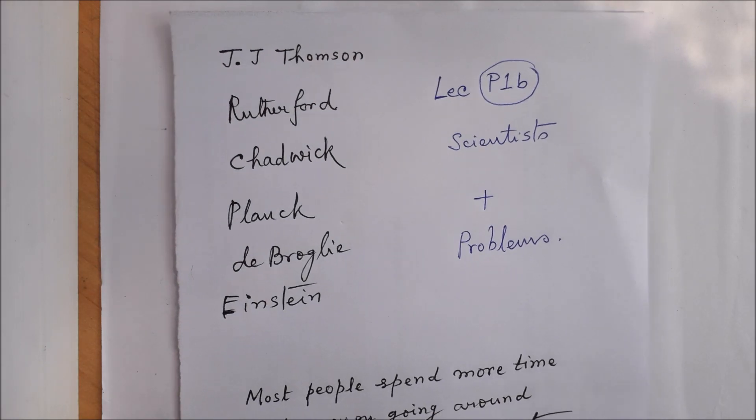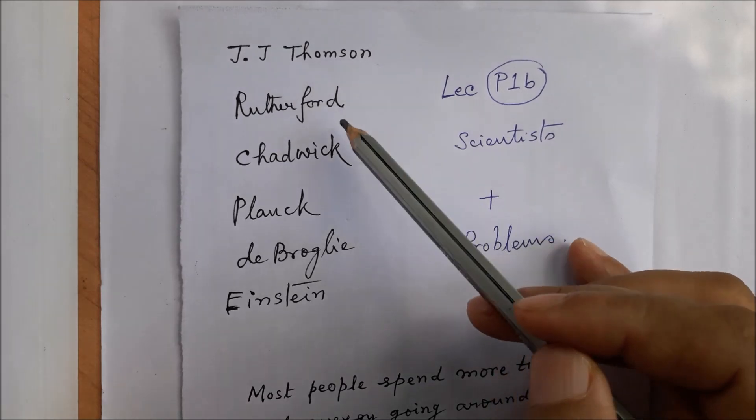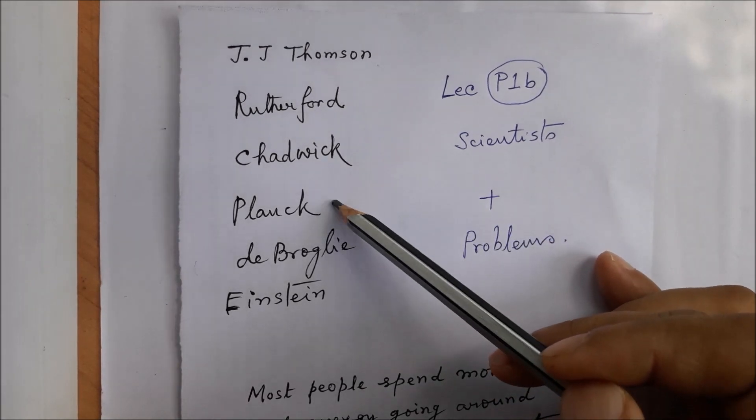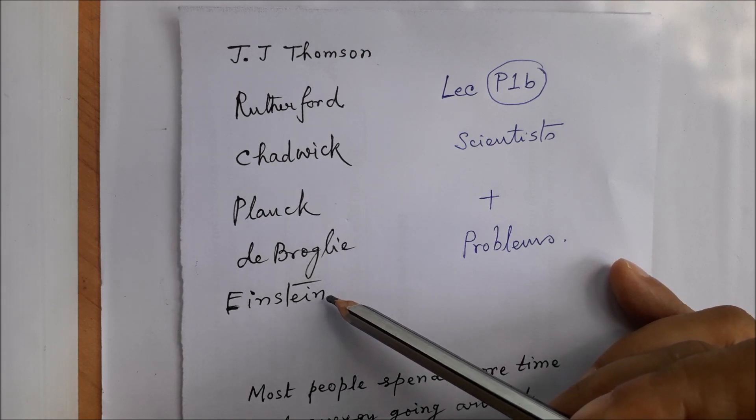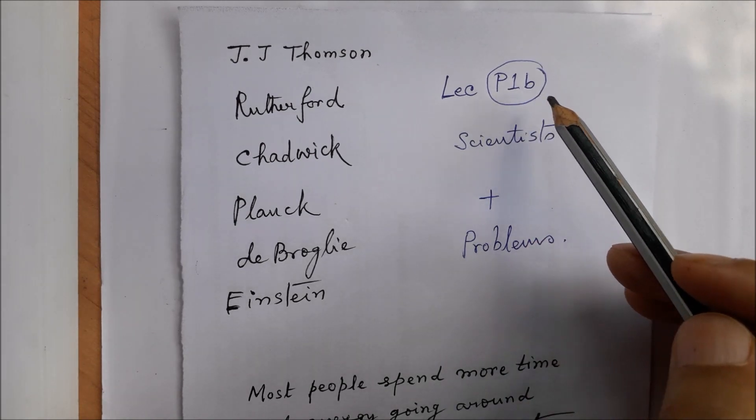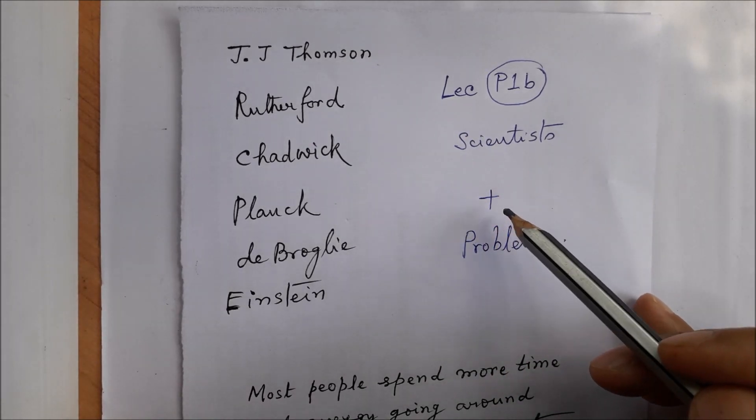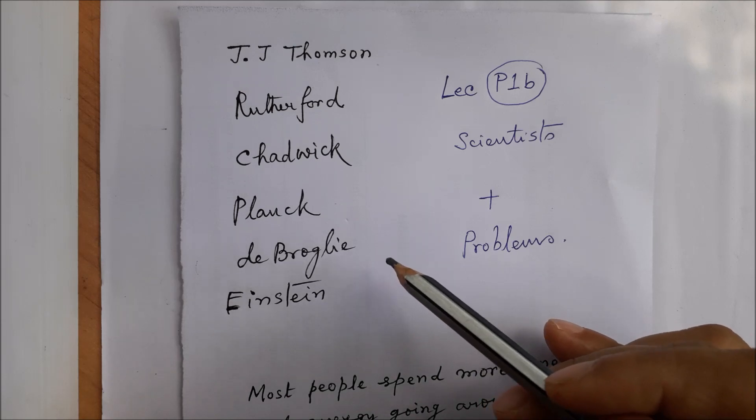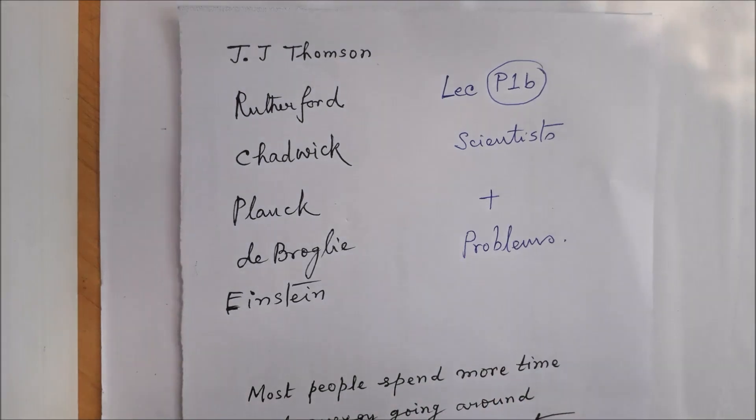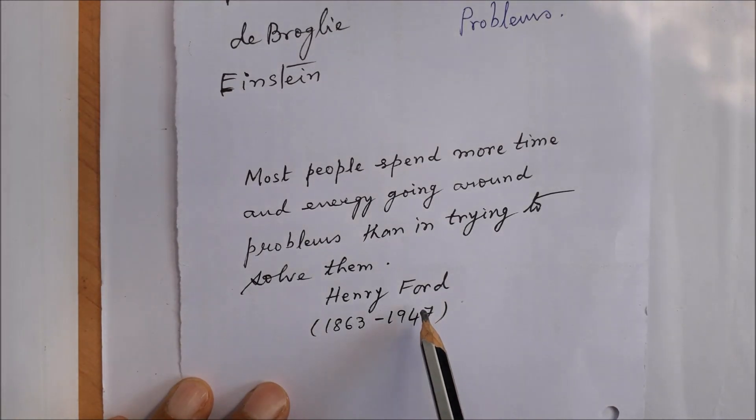In this lecture we came across certain scientists, famous people: J.J. Thomson, Rutherford, Chadwick, Planck, de Broglie, and Einstein. In lecture number P1B, we'll try to say a few things about these famous people and we'll discuss certain problems relating to the topic of today. Let me end up with this quote which was given by Henry Ford, who was the founder of Ford Motor Company and was an American industrialist and business magnate.